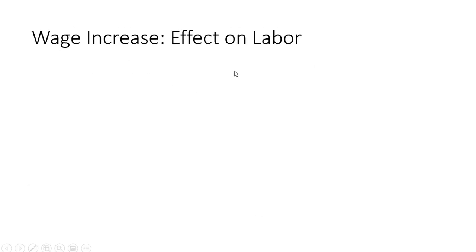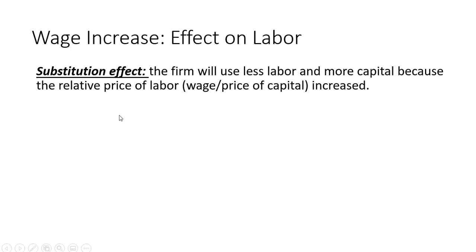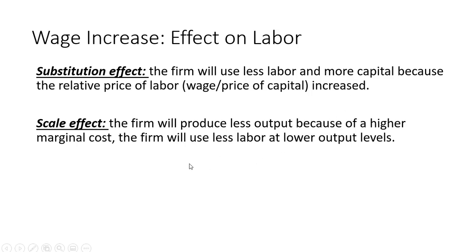Let's look at a wage increase and its effect on labor. The substitution effect: the firm will use less labor and more capital because the relative price of labor — which is the wage divided by the price of capital — increased. There will also be a scale or output effect: the firm will produce less output. The profit-maximizing output level, where marginal revenue equals marginal cost, will occur at a lower output level because of the rising marginal cost. As a result of the firm producing less output, the firm will use less labor and less capital at lower output levels.